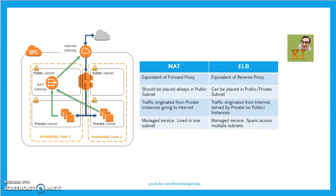On this slide you can see a setup. There is a VPC with two availability zones — basically two public subnets and two private subnets spread across two availability zones. We spread subnets across two availability zones because we want a highly available environment. In case one availability zone goes down, our application should continue to run. That's why we spread our VPC across two availability zones and keep subnets across both, with some public and some private.